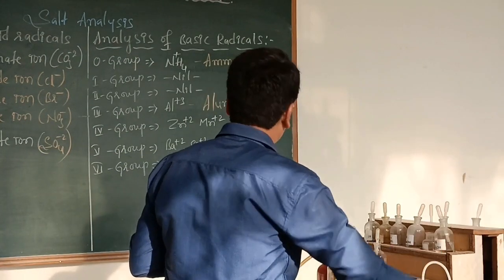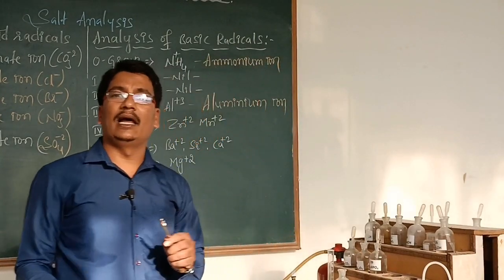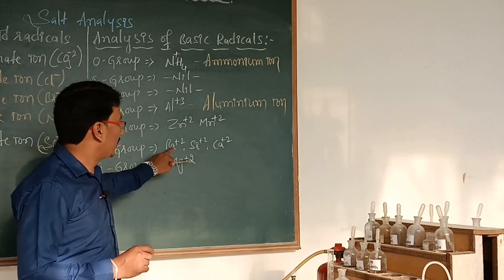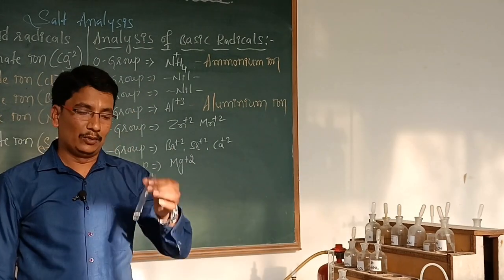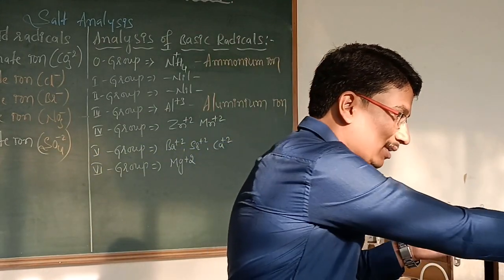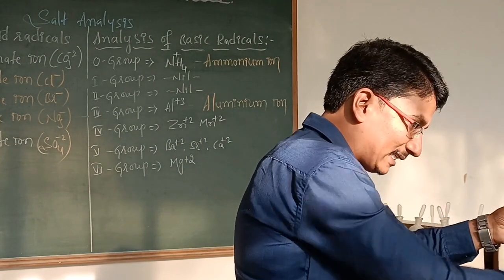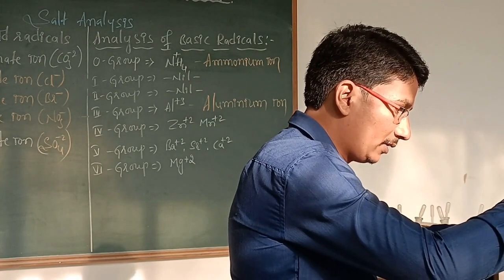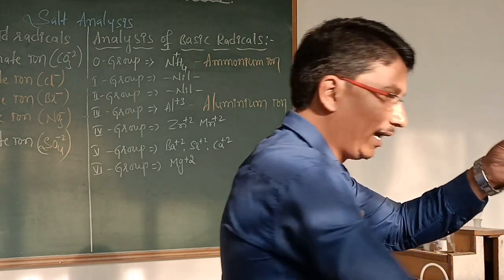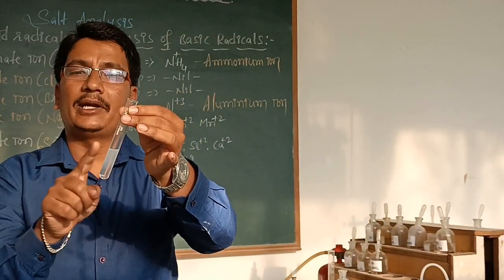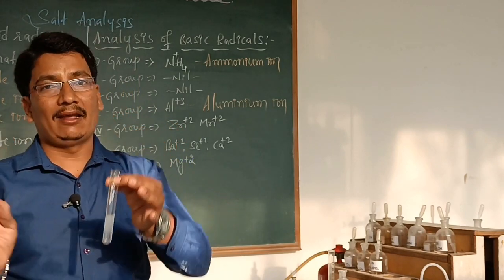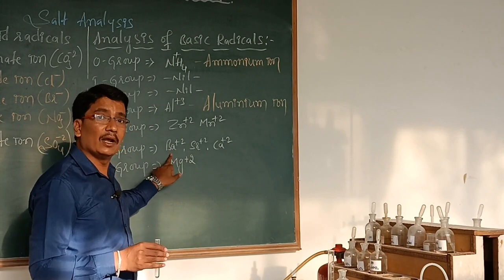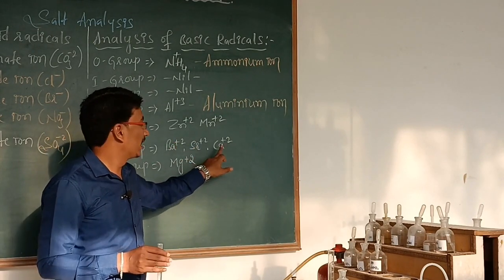The fourth group is zinc and manganese. The fifth group cations are barium, strontium, and calcium ions. For detection of the fifth group cation, to the original solution plus solid NH4Cl plus excess NH4OH, we add ammonium carbonate. If a white precipitate is formed, it indicates the presence of fifth group cations — it may be barium, strontium, or calcium. Then we have to conduct separate confirmation tests for barium, strontium, and calcium.